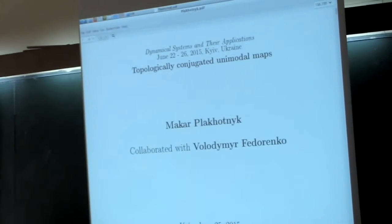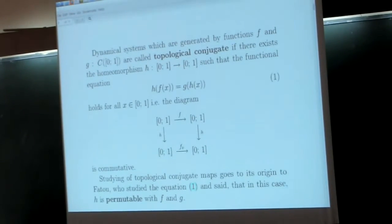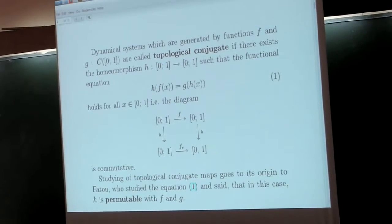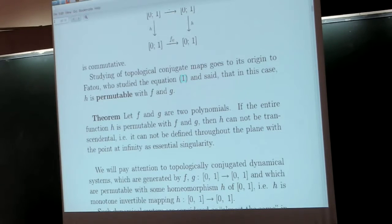Thank you very much. I'm going to talk about topological conjugation. This notion was created at the beginning of the 20th century. It's a problem of studying complex polynomials, and the following theorem: if an entire function h is permutable with polynomials f and g, then h cannot be transcendental essential. This means it cannot be defined on the complex plane with the point infinity as essential.